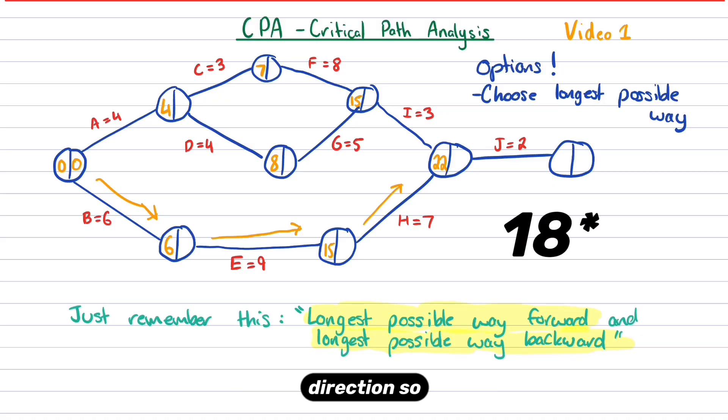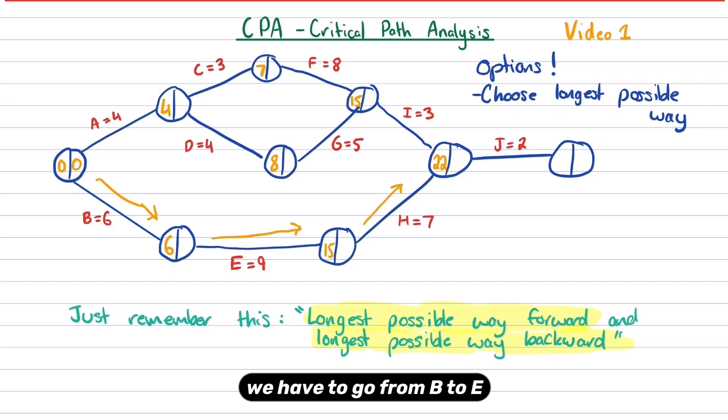If we went the middle direction, so four, four, five, and three, that's going to be eight plus eight, which is 16. So that's not the longest possible way. So we're going the longest possible way, which means we have to go from B to E to H. Therefore, we're going to have a 22 in that box.